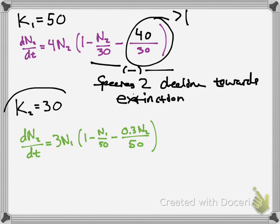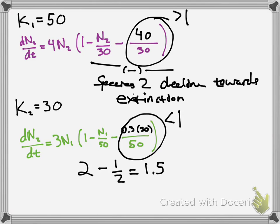Now let's look when we plug in the second carrying capacity into the other differential equation. If you plug that in, you'd get .3 times 30 over 50, which is less than 1. So if you subtract a number that's, say, 1, for example, and no, it doesn't even matter, it's just a 2, minus a number less than 1, say, 1 half, you'd still have a positive number.